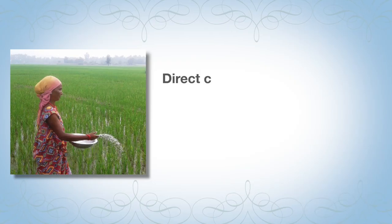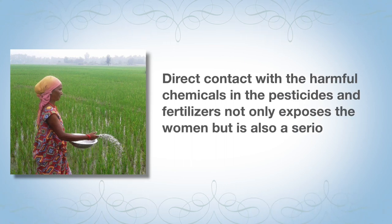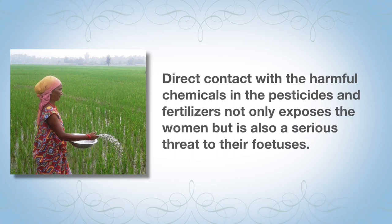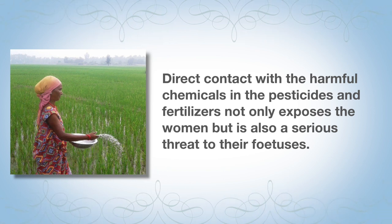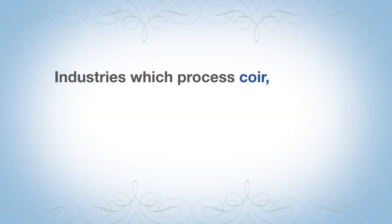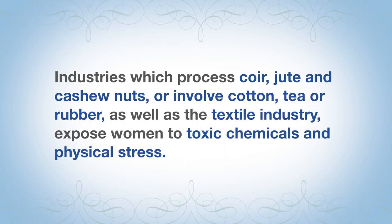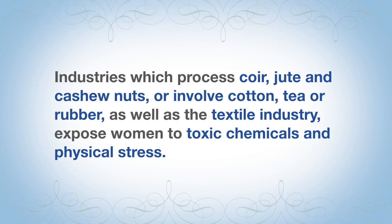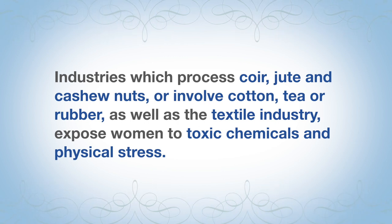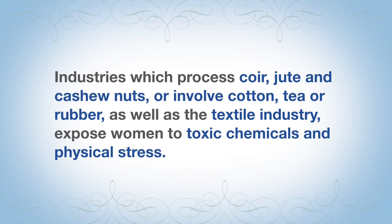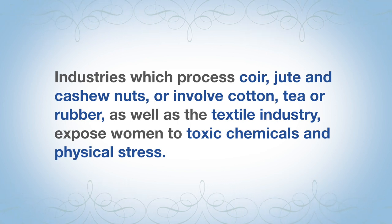When women are exposed to pesticides as laborers in the field, heavy doses of these chemicals during tilling of the land and picking of crops will affect their reproductive health. Direct contact with toxic chemical agents is a serious threat to the fetus forming in utero. Industries processing coir, jute, cashew nuts, cotton, tea, rubber, and the textile industry all expose women workers to toxic chemicals and physical stress.